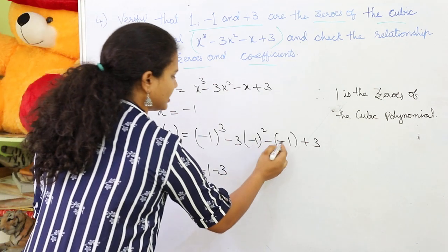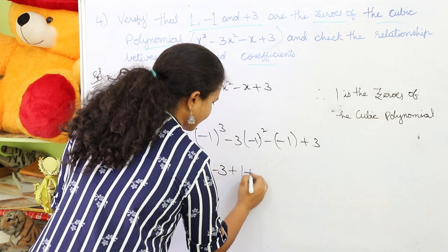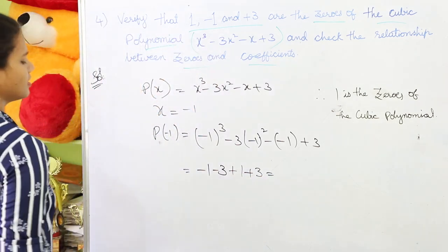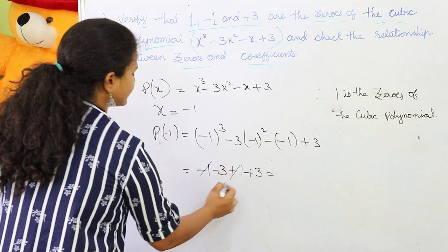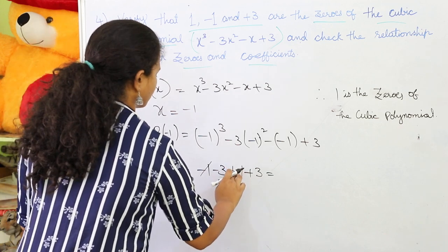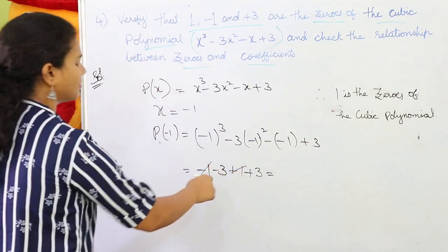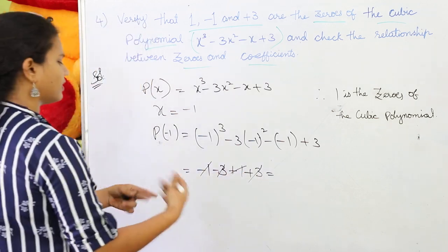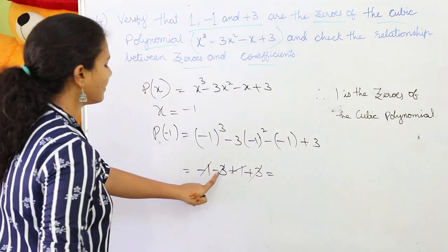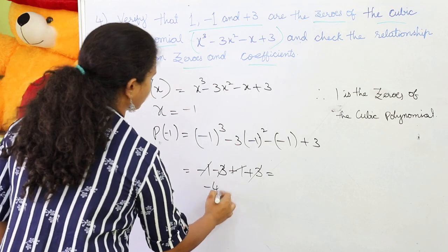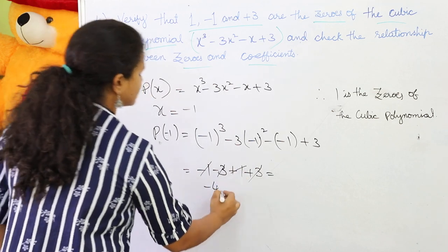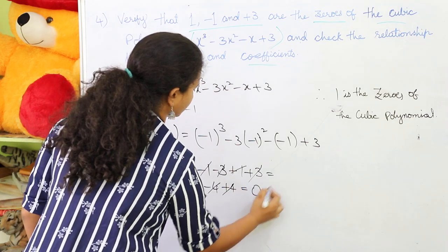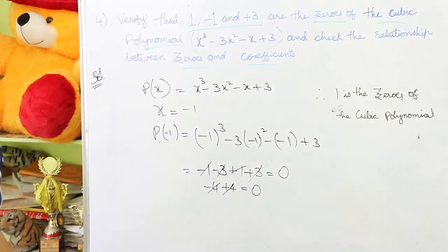So we have: -1 - 3 + 1 + 3. We can see -1 + 1 cancel, and -3 + 3 cancel, giving 0. Alternatively: -1 - 3 = -4 and +1 + 3 = +4, where +4 - 4 = 0. So this also becomes 0.